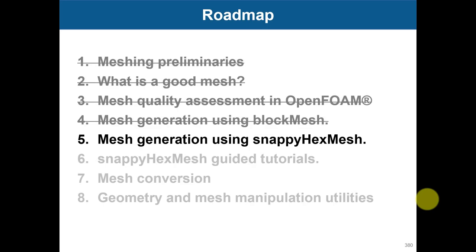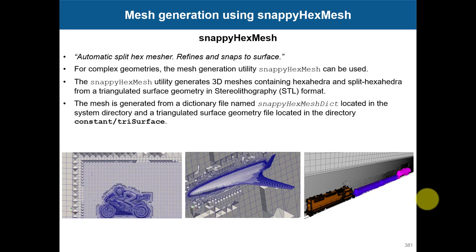Welcome back. Now let's move to snappyHexMesh - this is the introduction plus the first tutorial to show you how to use it. SnappyHexMesh is an automatic split hex mesher. It refines and snaps to the surface, meaning it makes the mesh body-fitted to the surface, and refines by dividing hexes in a Cartesian manner.